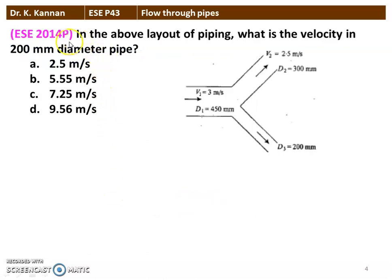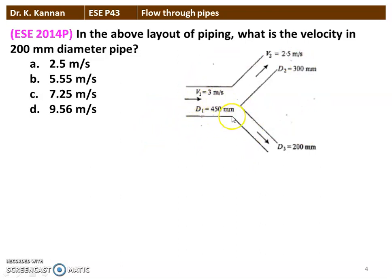The next question is from the 2014 question paper. In the above layout of piping, what is the velocity in the 200 mm diameter pipe? In the diagram, the first pipe has velocity V1 equal to 3 meters per second and diameter 450 mm. In the branch, V2 equals 2.5 meters per second and D2 equals 300 mm. D3 equals 200 mm, and we have to find the velocity V3.